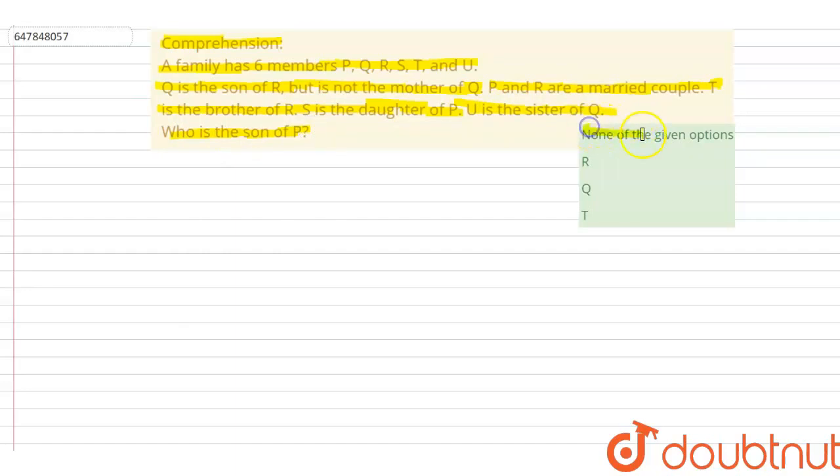Options are given. None of given options, R and T. So let's solve this. First line given is Q is son of R. So Q is male.